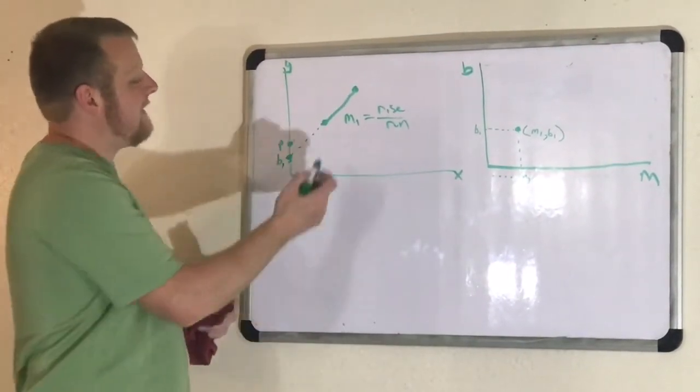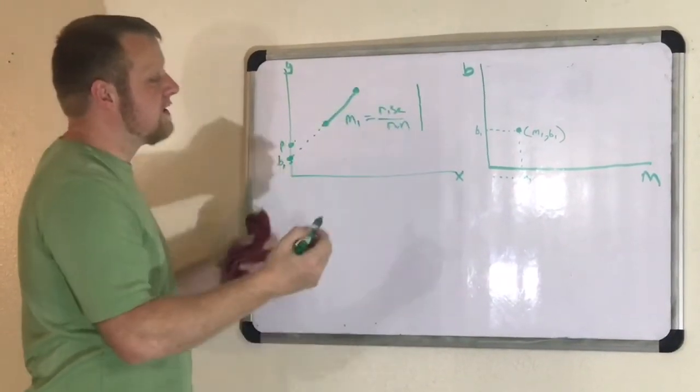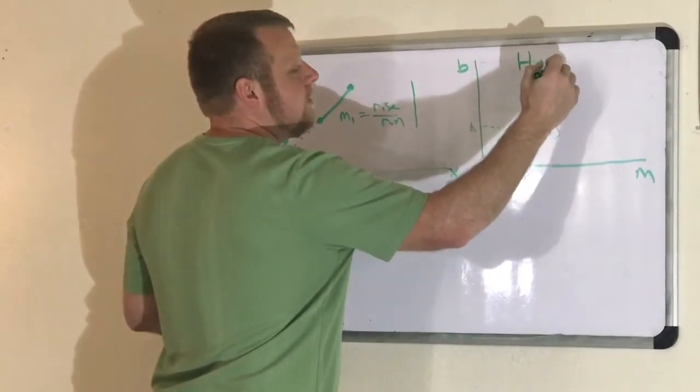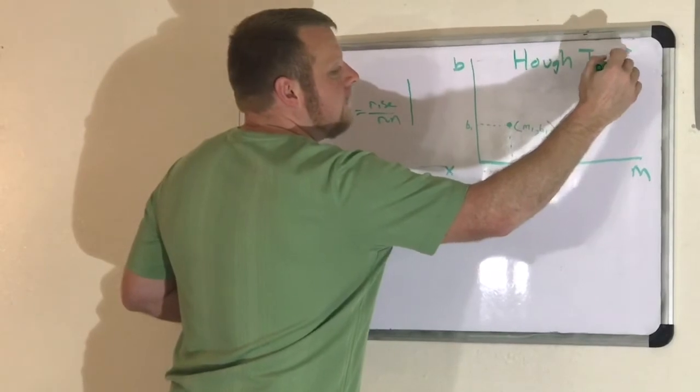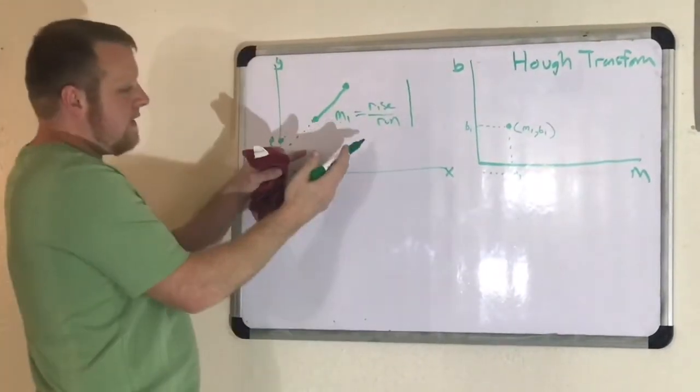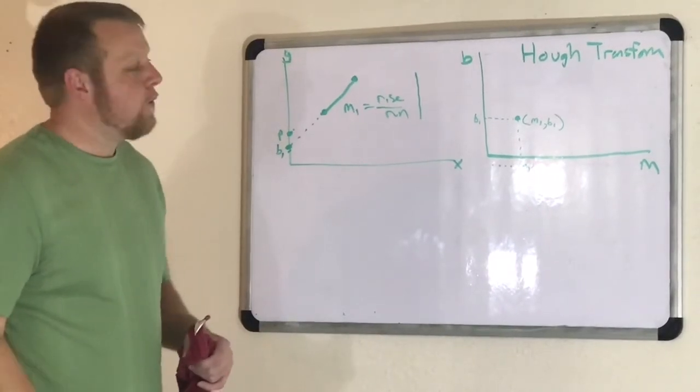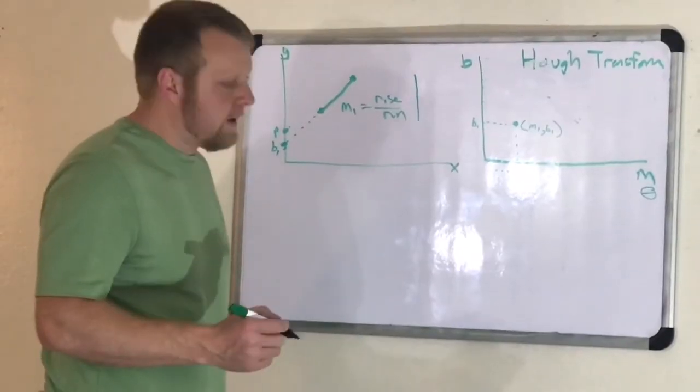The reason why is because we can't find slopes of vertical lines on the XY coordinate system. What's the slope of that? We can't define that. So we do what they call the Hough transform. H-O-U-G-H, I believe. And that's all it is. It's transforming this to this. However, we're going to also transform our coordinate system. We're going to use polar coordinates instead of XY coordinates.